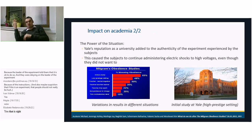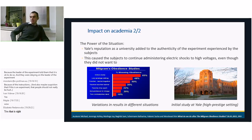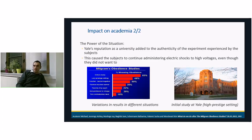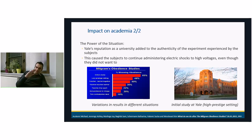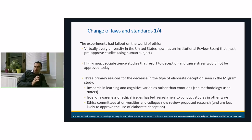The power of the situation was demonstrated — the initial study was done at Yale, a high-prestige setting, which added to the authenticity and caused subjects to continue administering shocks to high voltage even when they didn't want to. As a result, virtually every university in the United States now has an institutional review board that must approve studies using human subjects.